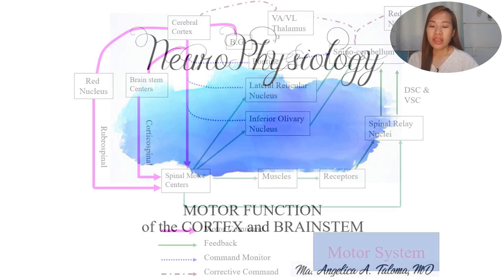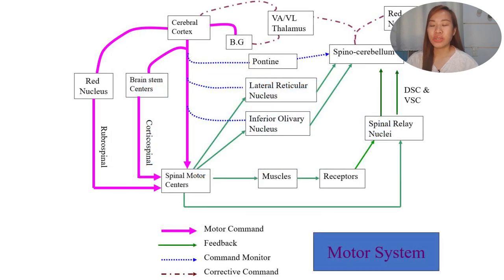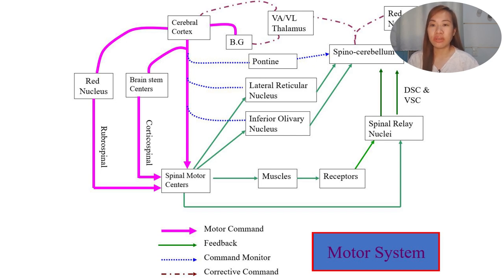On this picture shown on the screen, we can see the motor system of the body. There are different parts of the brain related to motor function. The first one we have discussed before is the spinal control, or motor control, of the spinal cord. Now we're going to talk about the cortex and the brainstem and how they control the motor functions of the body.